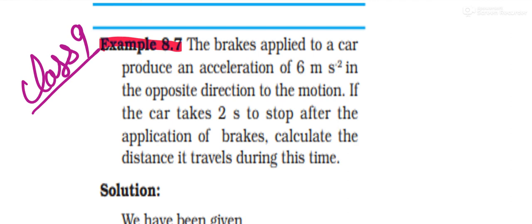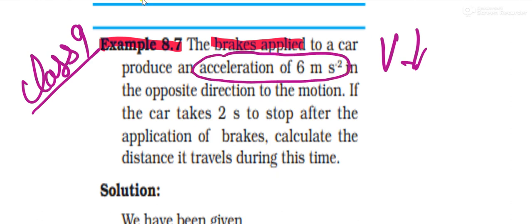Now we will see what this problem asks. It is the seventh example from the eighth chapter of class 9 physics NCERT. The car applies the brake, that's going to be retardation—the velocity is going to decrease. The retardation is 6 meters per second squared. When velocity is decreasing, the acceleration is called retardation, it is opposite motion.